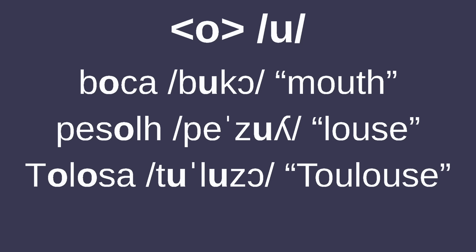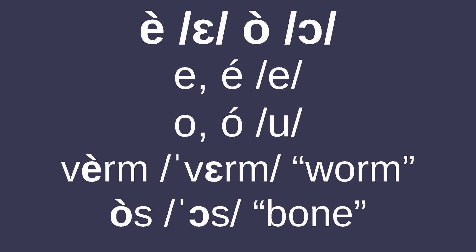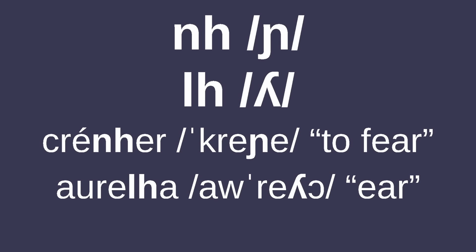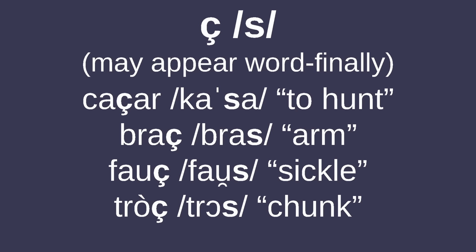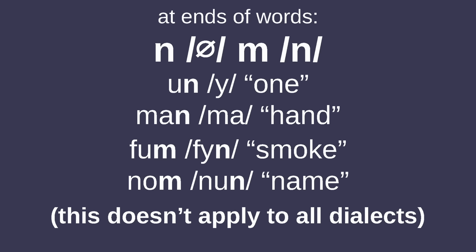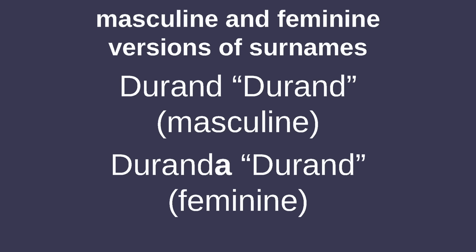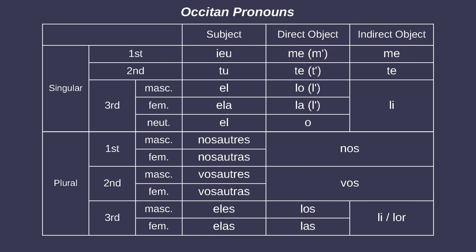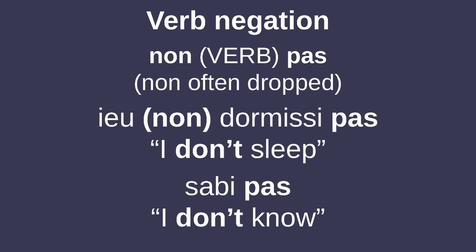Since /u/ was historically /o/, it's written with the letter O. To distinguish open mid E and O from /e/ and /u/, graves are used. NH is used to write the palatal nasal /ɲ/, and LH is used for /ʎ/. Cedilla is used for /s/ sometimes, and unlike most Romance languages using that letter, it can appear at the ends of words. N is silent at the ends of words, and M is pronounced /n/ in that context. Surnames are also marked for gender, with the feminine version marked with A. When negating verbs, the verb is surrounded by 'non' and 'pas,' though oftentimes the 'non' is dropped, leaving just 'pas.'